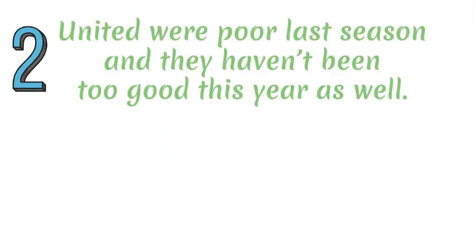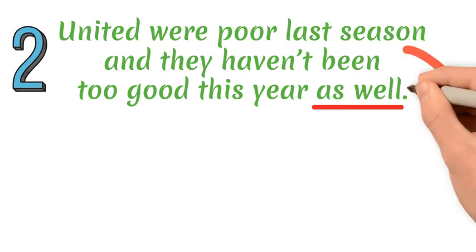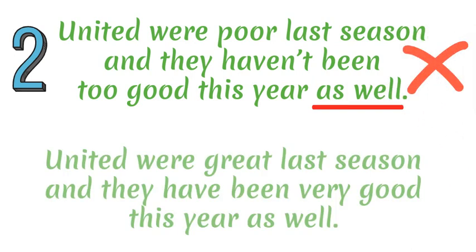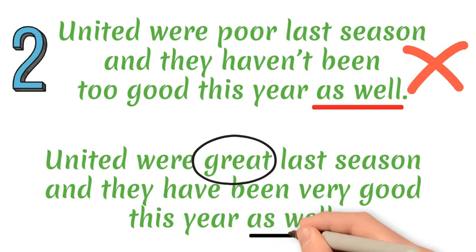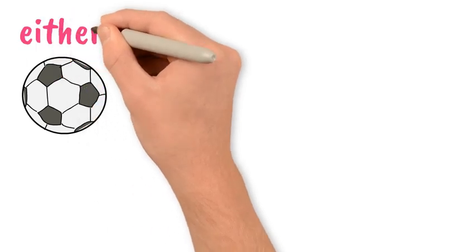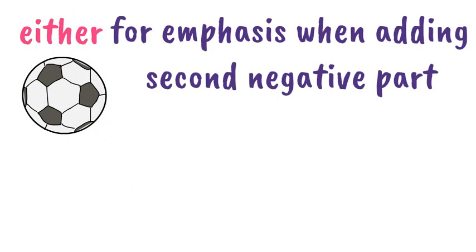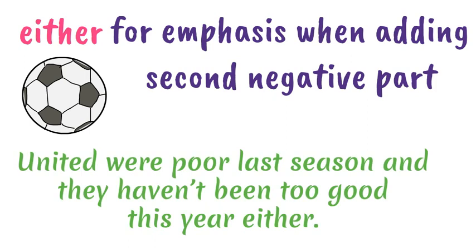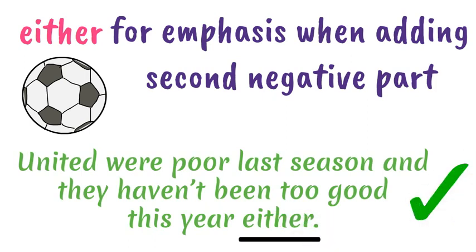Mistake number two. If we were to give a sentence a positive meaning, 'too' or 'as well' would work. However, when we add a second negative part to a sentence with emphasis, we have to use 'either' at the end of it, instead of 'as well' or 'too'. For example: 'United were poor last season and they haven't been too good this year either.'